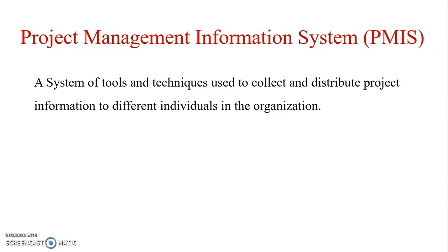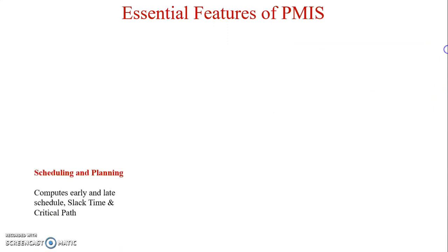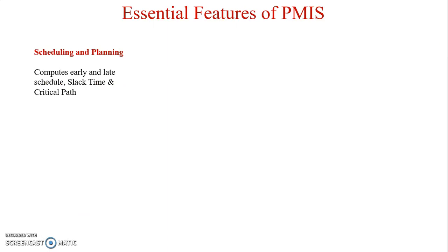In simple words, PMIS provides detailed information to the project manager about all projects in an organization. Now let's see the essential features of project management information system. The first feature is scheduling and planning. With the help of PMIS, a manager can compute early and late schedules, slack time, and critical path.